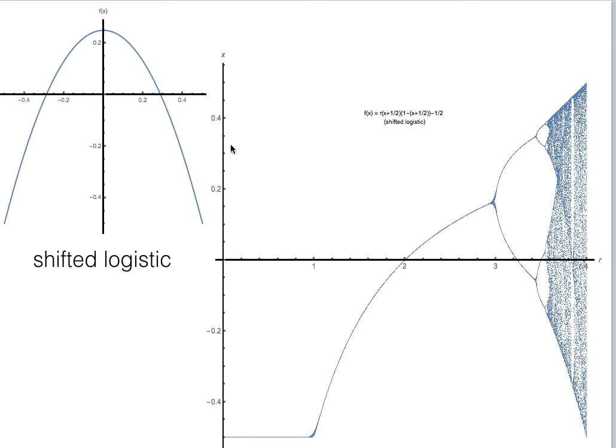But something that we didn't talk about when we were looking at the logistic map is we didn't talk about the fact that the logistic map is not the only map that has an orbit diagram that looks like this.